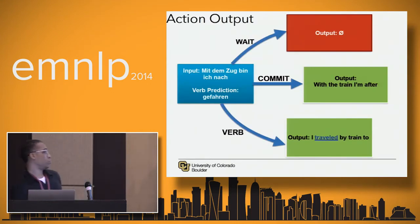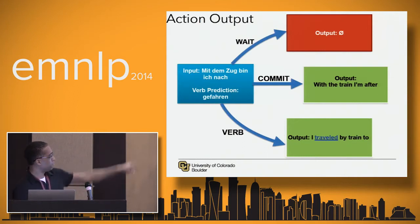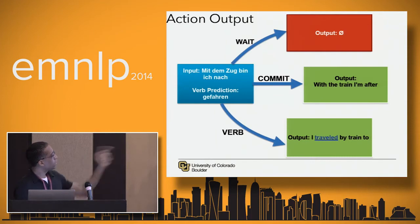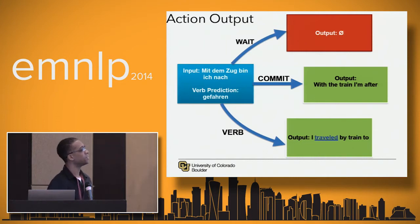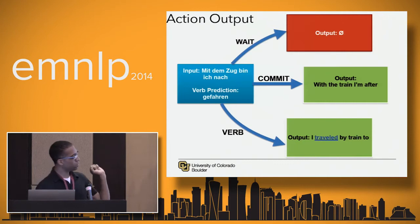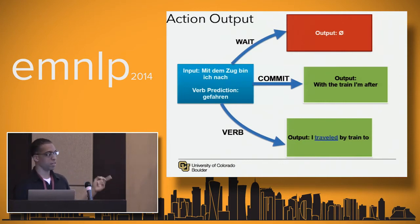To give a visual interpretation: if we have the input and a verb prediction, and we take a wait action, we don't produce any output. If we commit naively — and I did not make this up, this is what a popular machine translation system produced — you get something terrible. What we want to do is apply our verb prediction in order to get a reasonable partial translation.